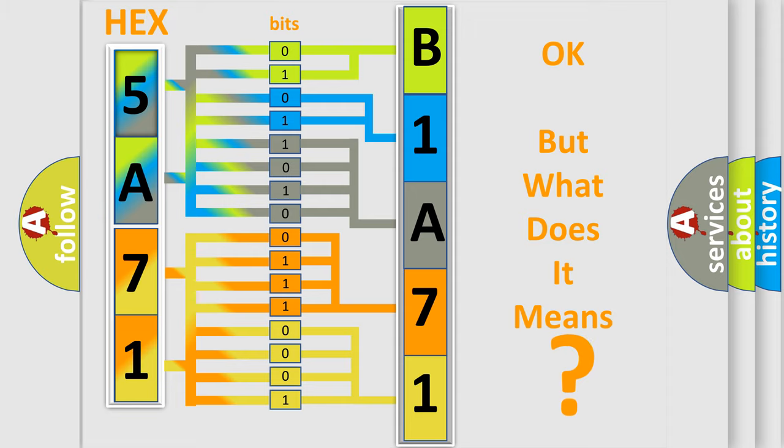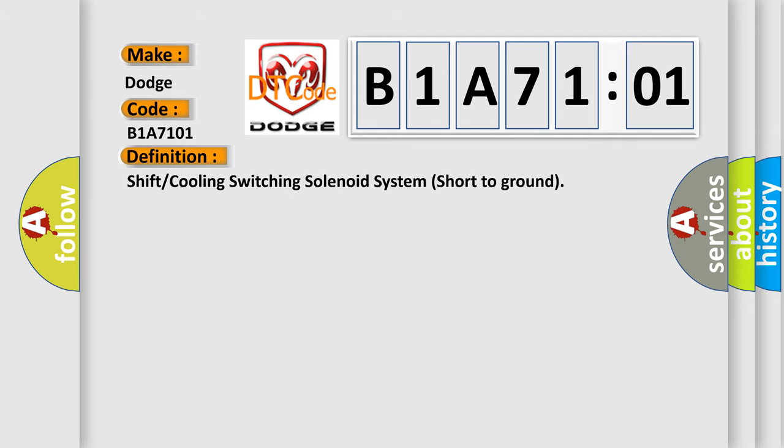So, what does the diagnostic trouble code B1A7101 interpret specifically? Dodge car manufacturer. The basic definition is shift or cooling switching solenoid system short to ground.